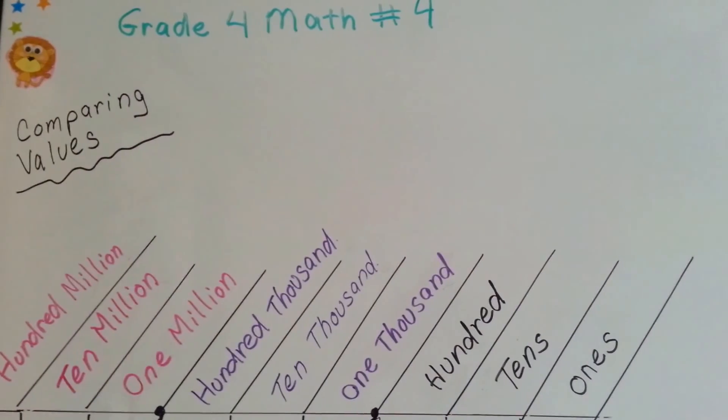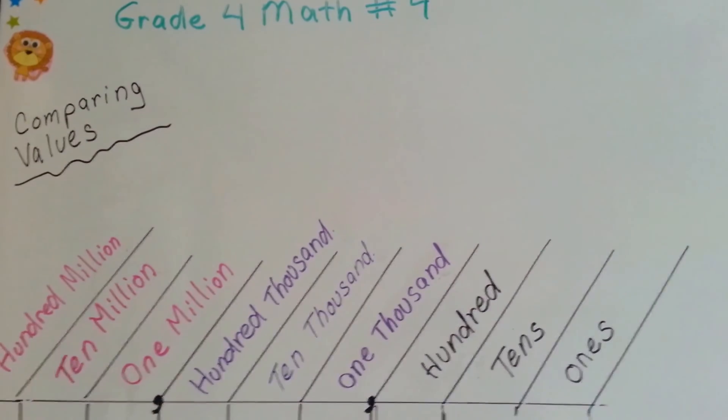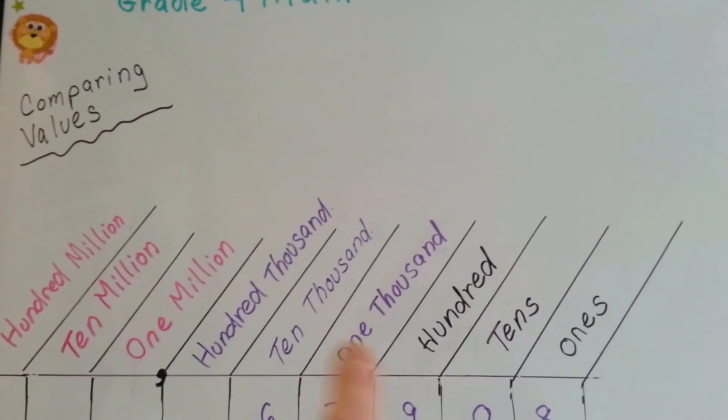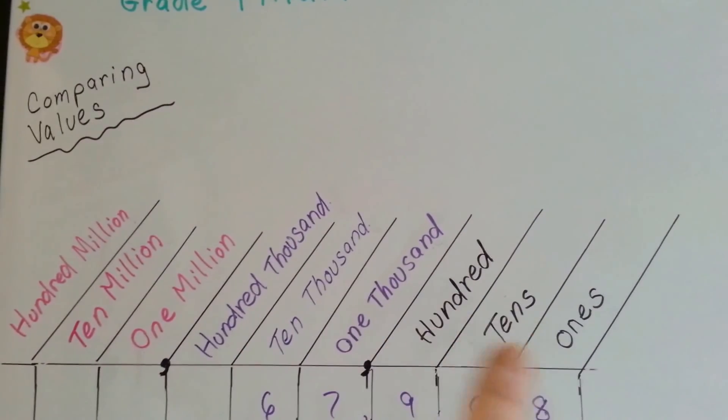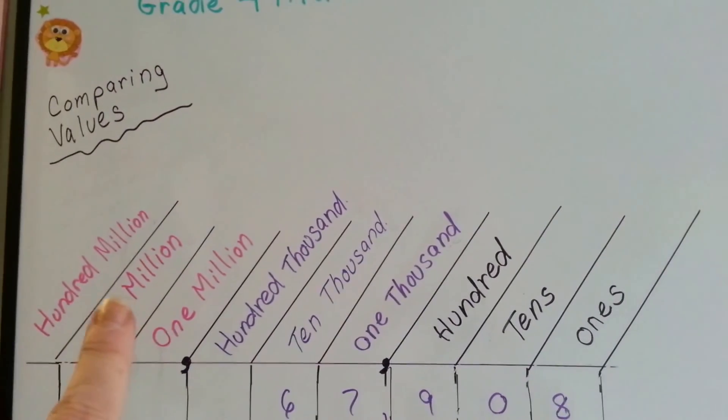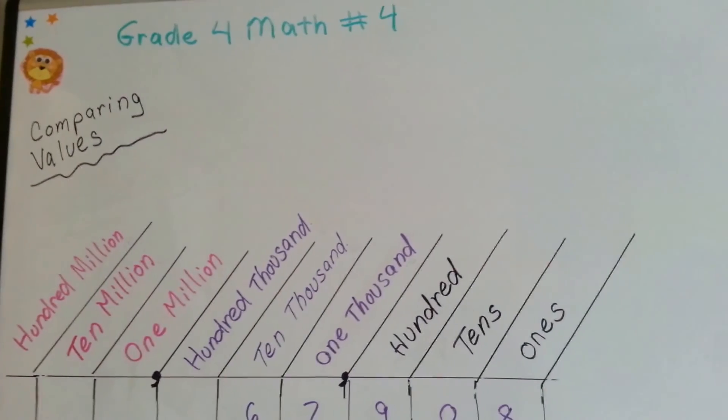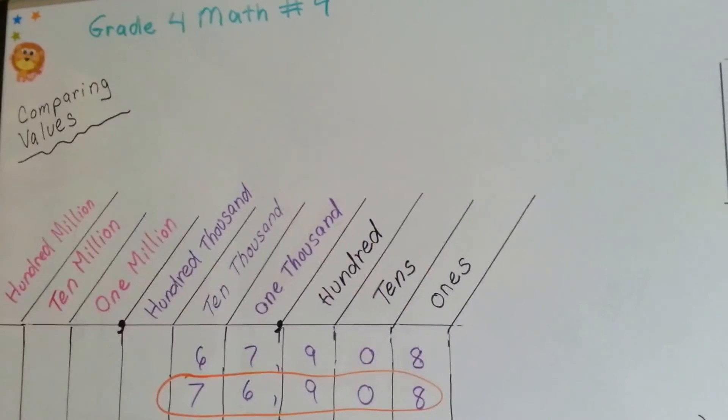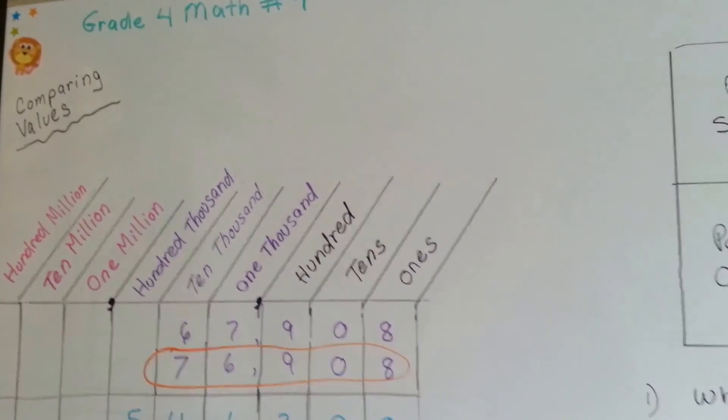That's comparing place values. Try to remember these as much as you can. Try to memorize them, in fact. Remember that these are the ones, tens, and hundreds. Then it goes thousands, and next to that is the millions. Okay? I'll see you next video. Bye.